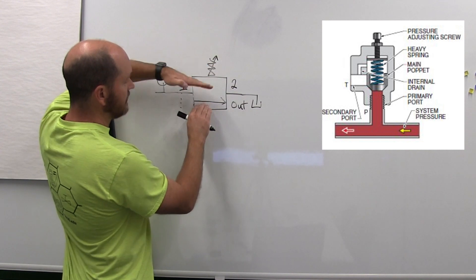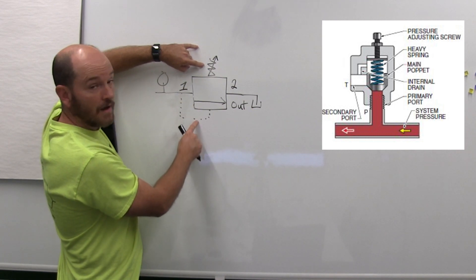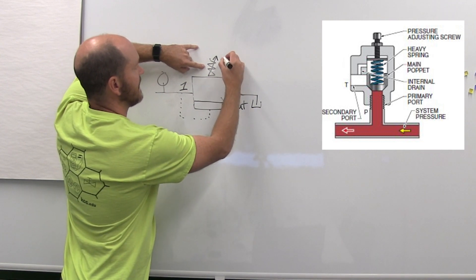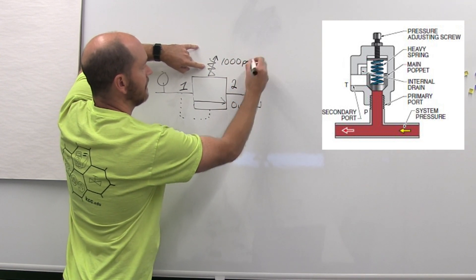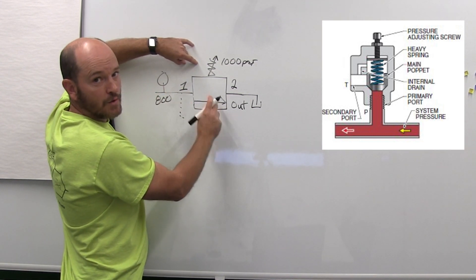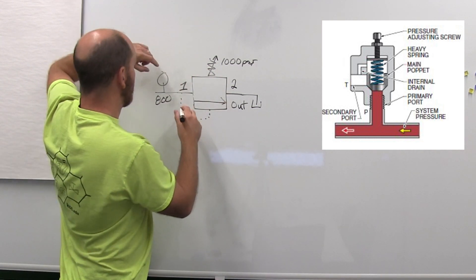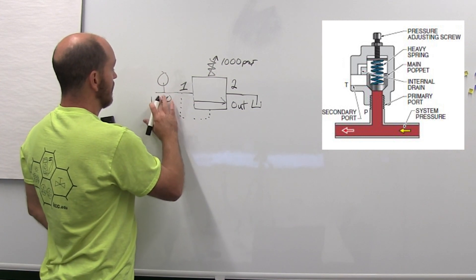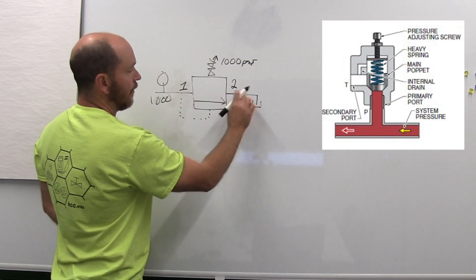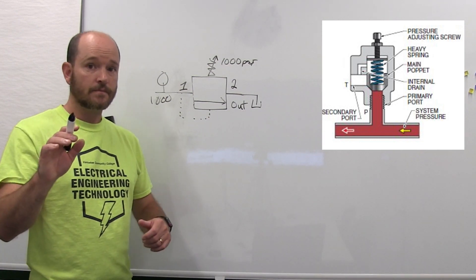This poppet is going to be balanced out by the comparison of the spring and the hydraulic pressure. If my spring pressure is set to a thousand psi and I have 800 psi here, this will be closed or only cracked open. But if this is at a thousand psi, this poppet would move up and oil would be allowed to go back to tank.